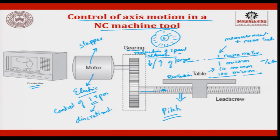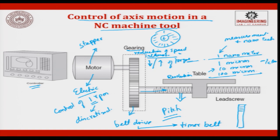If the distance between the motor gear and the table gear is slightly far off, we always go for a belt drive. In many CNCs, in order to have reduced friction and a positive drive, we use something called a timer belt. Timer belts have striations on the cross section, and the pulleys have matching striations — so when distances are far off, we attach with a timer belt.